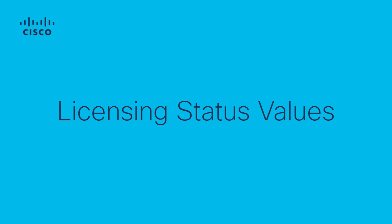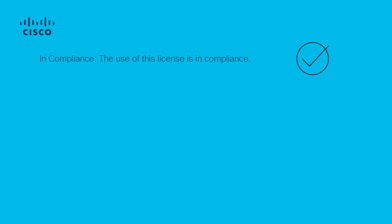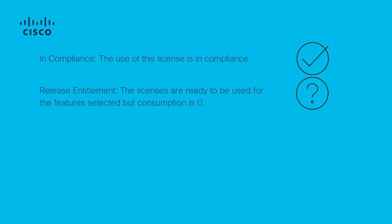Upon the registration of ISE with the SSM, we have the following values. In Compliance: the use of this license is in compliance. Released Entitlement: the licenses are ready to use in the feature related to the license type, but none of these have been consumed so far in the ISE environment. In such a scenario, the consumption count for this license is zero.